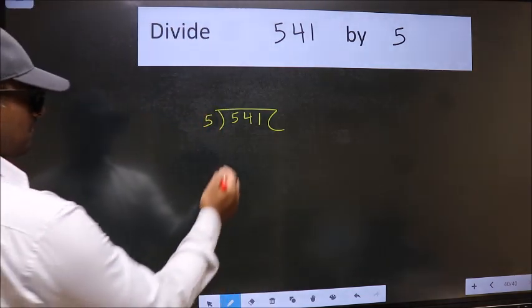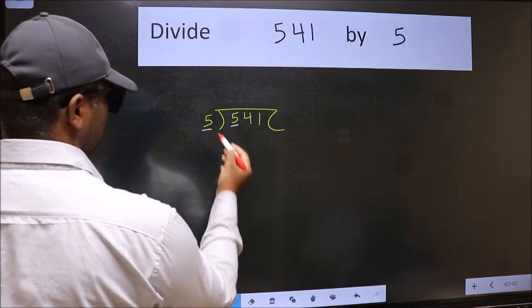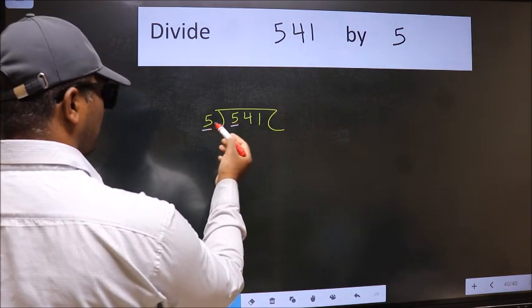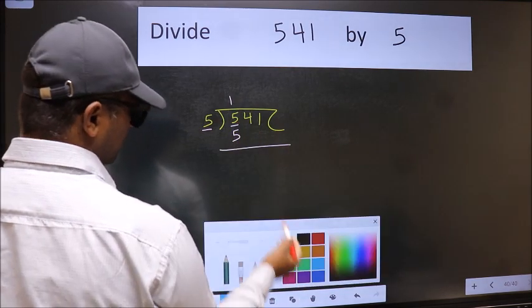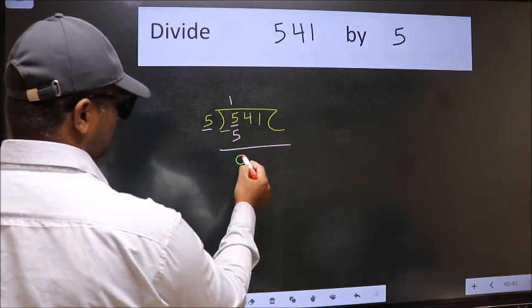Next, here we have 5 and here also 5. When do we get 5 in the 5 table? 5 once is 5. Now we should subtract. We get 0.